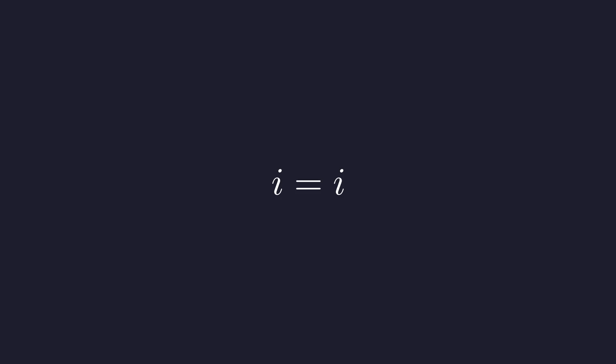And there we have it. i equals i. The sanity check passes, confirming our principal value is correct. Everything checks out.